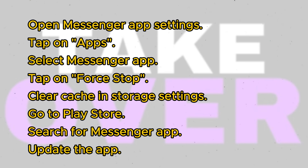To begin, open up your Messenger app and navigate to the settings. Tap on the settings icon to access the settings window. Scroll down within the settings until you find the option for apps, then tap on it to proceed to the apps window.